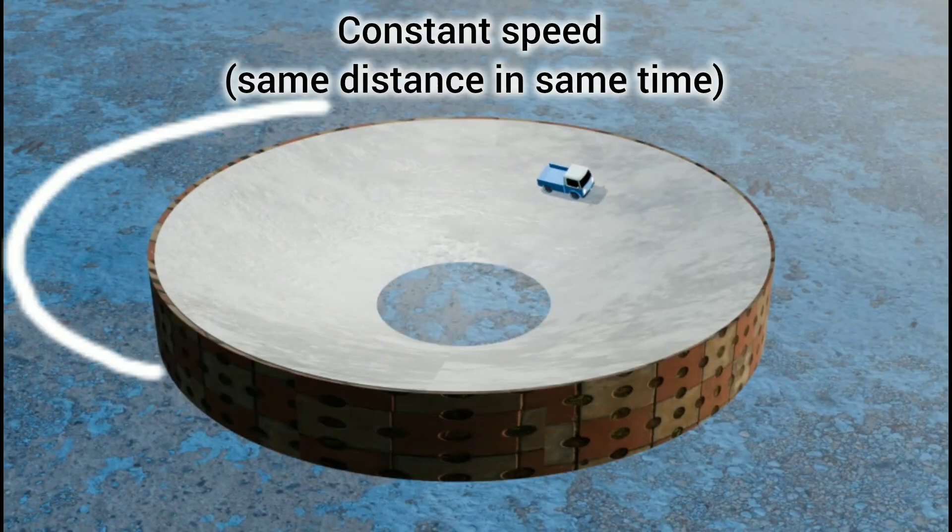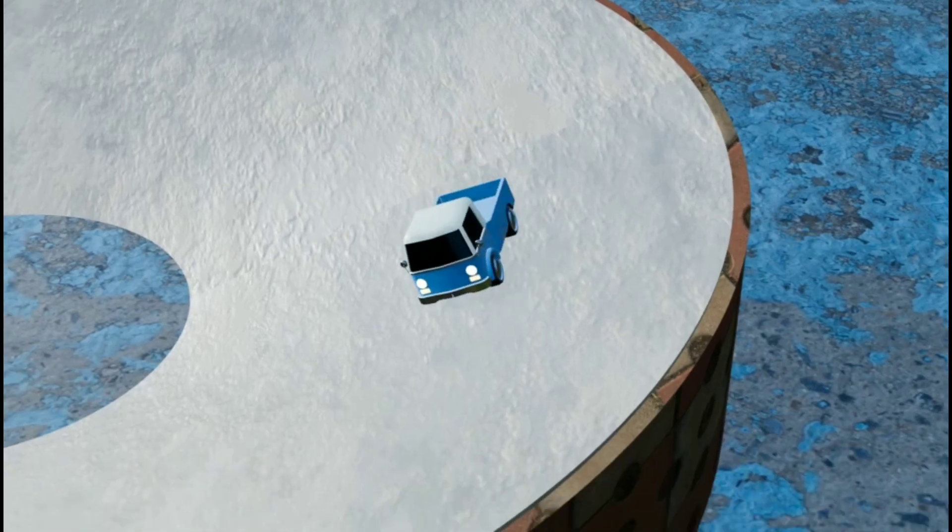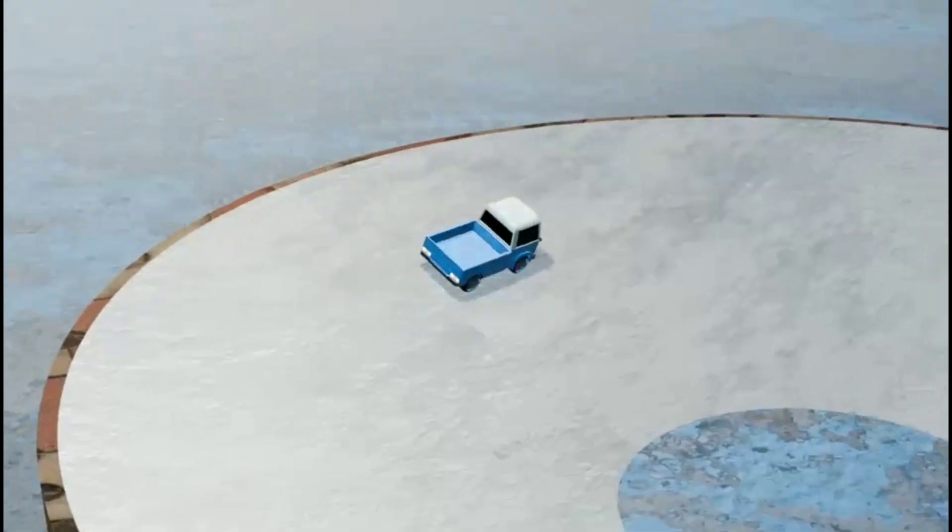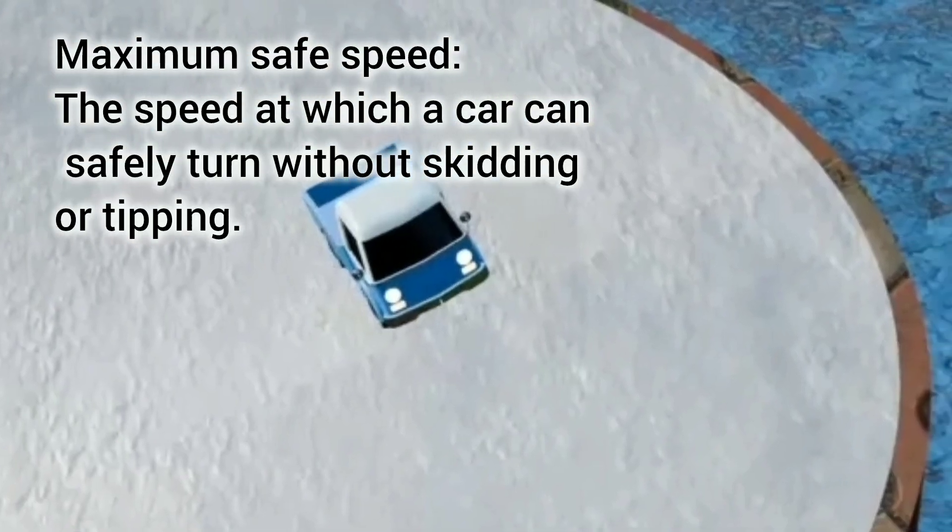When a car turns on a banked road with constant speed, it's essential to consider the forces acting on it to determine the maximum safe speed. Let's break it down.